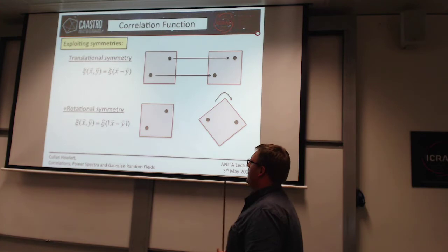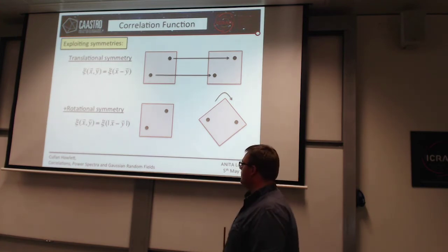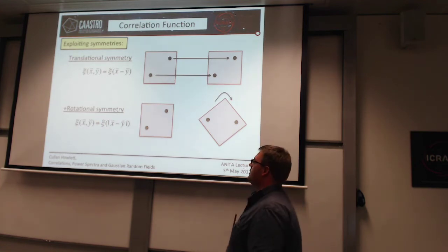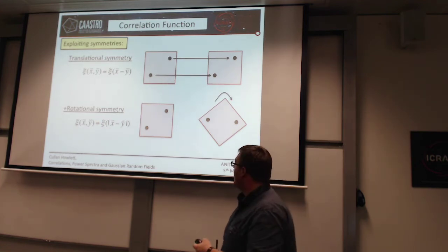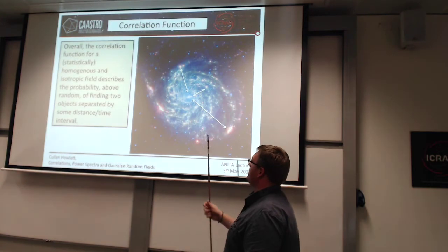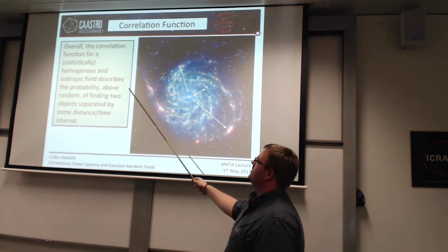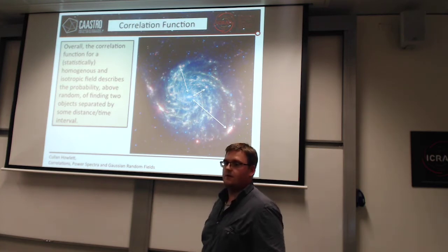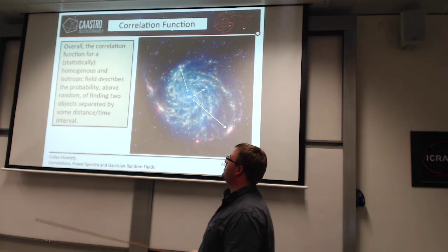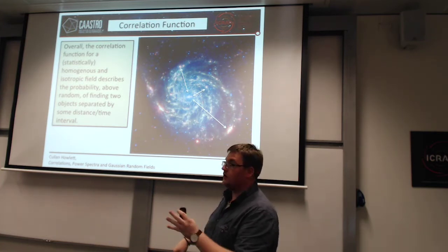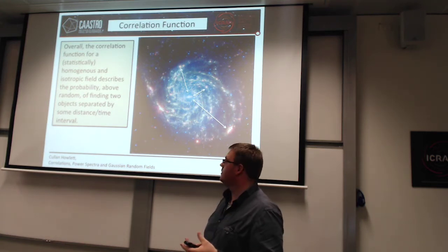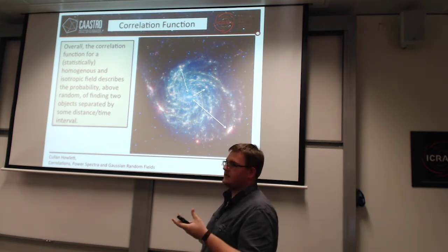This is extremely useful in astrophysics, because there are lots of cases where we think we've got fields which are both translationally and rotationally invariant. For a statistically homogeneous and isotropic field — invariant under translation and rotation — the correlation function describes the probability of finding two observables or objects separated by some distance.